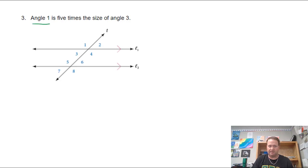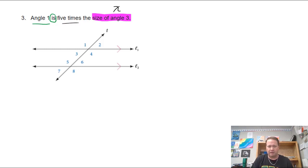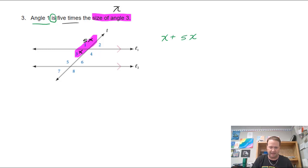Problem three: they tell me angle one is five times the measure of angle three. The unknown is angle three, so let angle three equal x. That makes angle one equal to 5x. Looking at the relationship between angles one and three — they make a straight line, so the equation is x plus 5x equals 180 degrees.